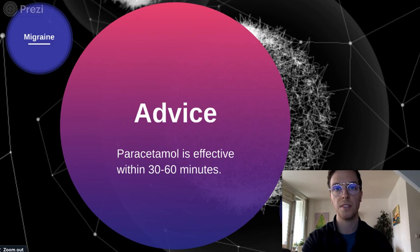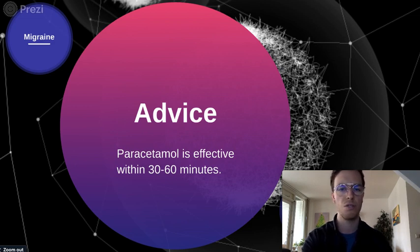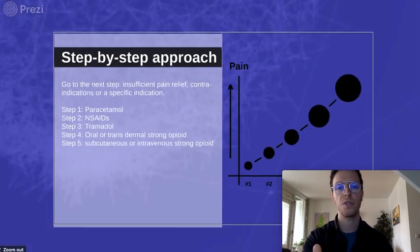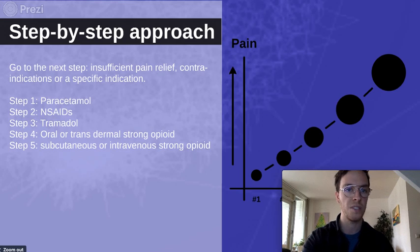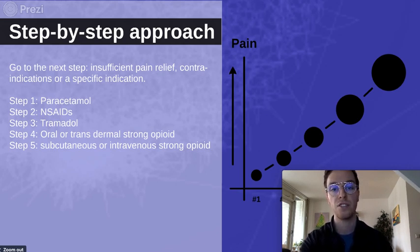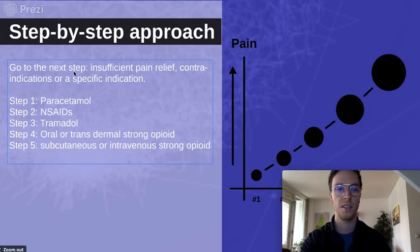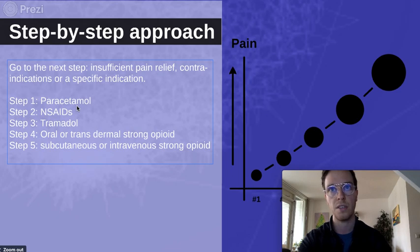Some advice: paracetamol is effective within 30 to 60 minutes after oral intake, and rectal intake may take longer, usually one and a half hours. Looking at pain treatment, this is a step-by-step approach in which the first step is paracetamol. If this gives insufficient pain relief, there are contraindications, or there is a specific indication — for example, some serious illness like cancer may need stronger painkillers like opioids, and then you skip the first few steps. The first step is paracetamol; if insufficient, then NSAIDs like ibuprofen or diclofenac, which also have anti-inflammatory effects.